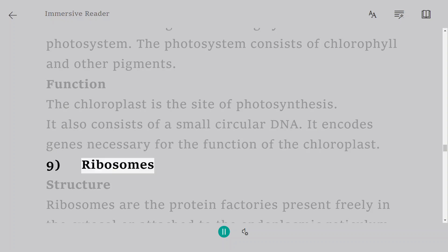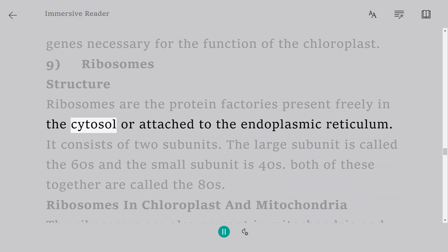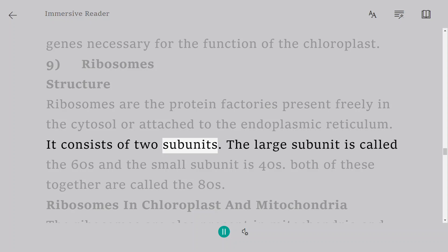9. Ribosomes. Structure: Ribosomes are the protein factories present freely in the cytosol or attached to the endoplasmic reticulum. It consists of two subunits. The large subunit is called the 60s and the small subunit is 40s. Both of these together are called the 80s.